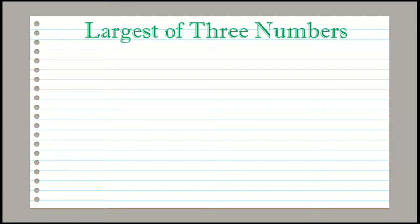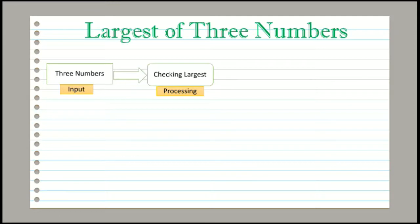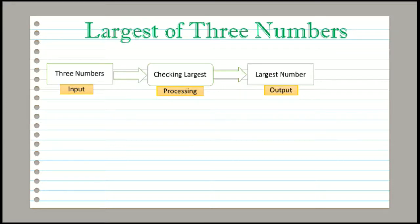The given problem is to find which number is largest between any 3 given numbers. In this problem, 3 numbers will be the input. Checking which number is the largest will be the processing part — we will determine whether the first, second, or third number is largest. In the output part, we will print the largest number.